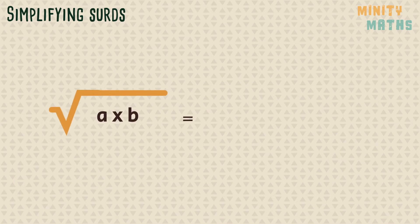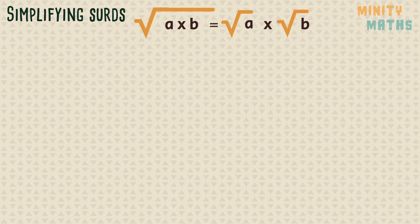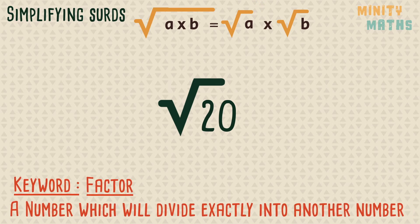Here is the first rule. You can use this rule to turn the number under the root sign into smaller numbers. Let's look at this example. To simplify the square root of 20, we need to find two factors which multiply together to make 20.